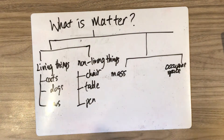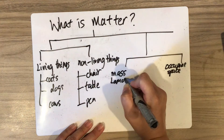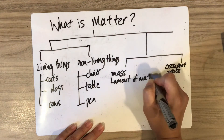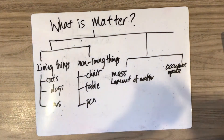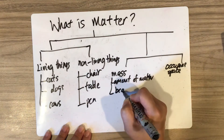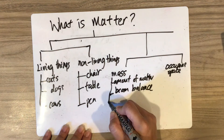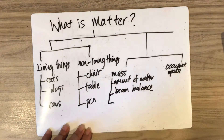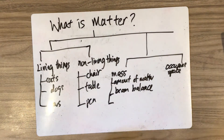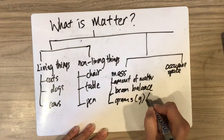Matter has mass. Mass is the amount of matter contained in a body or an object. The mass of an object can be measured using a beam balance, and it is measured in grams or kilograms.